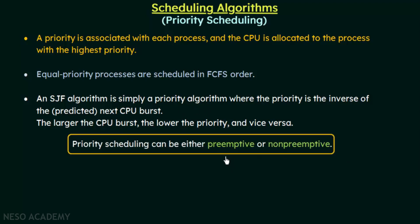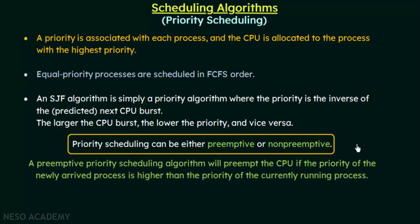Priority scheduling can either be preemptive or non-preemptive. In preemptive priority scheduling, the algorithm will preempt the CPU if the priority of the newly arrived process is higher than the priority of the currently running process. The CPU is taken away from the currently executing process and given to the newly arrived higher-priority process.